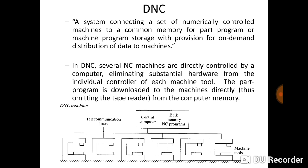As you can see in this diagram, there is one centralized computer system that has bulk memory where you can store a number of NC programs. There are a few NC machines directly connected with the centralized computer system via telecommunication line. Those individual NC machines do not consist of a controller — that controller is replaced by the centralized computer system. You store the data, i.e. the manual part program, in the centralized computer system, and then that part program is sent to the different machines as per requirement.